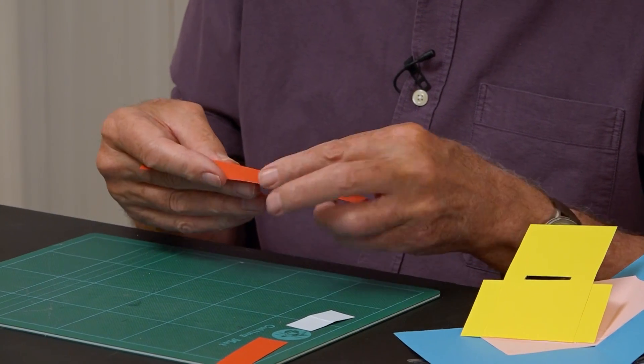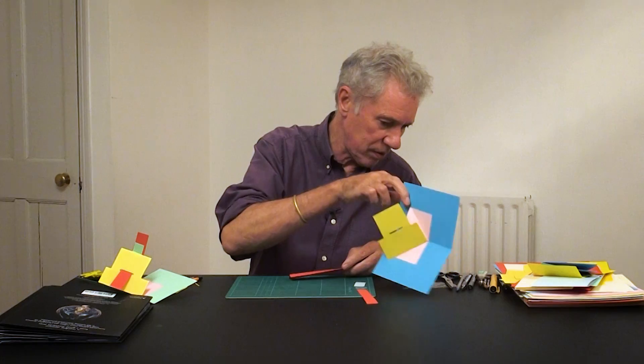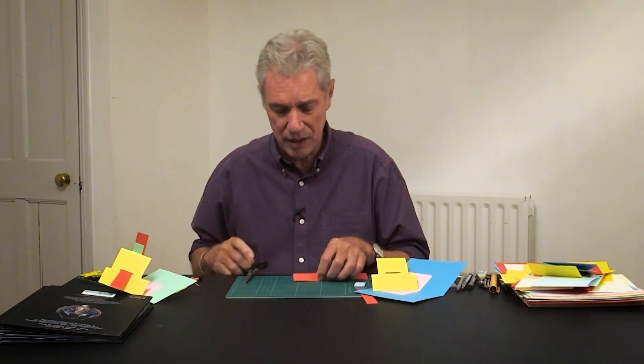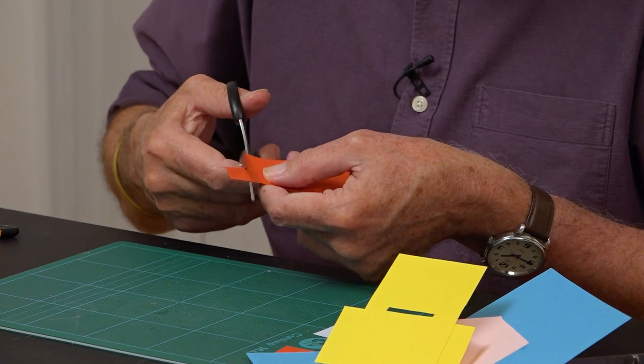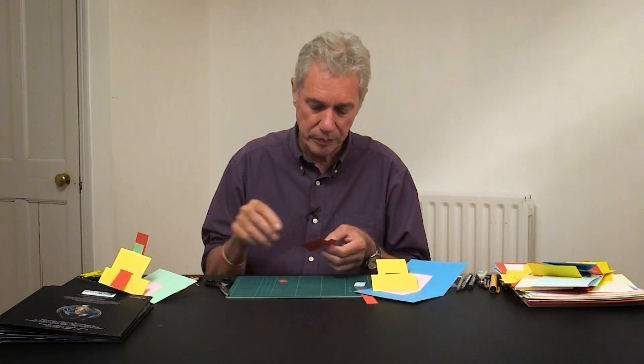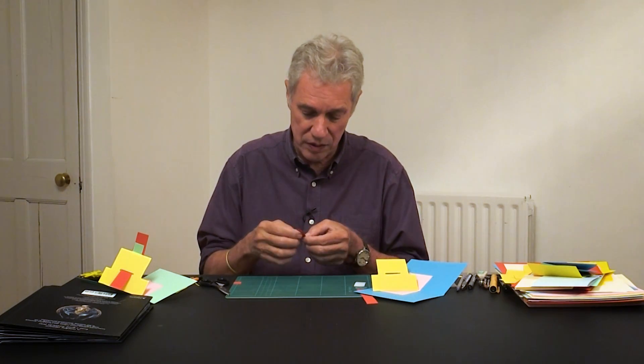So here's the strip I've made. It's got a crease down the middle. I'm going to glue it in a minute, but first we'll just make a tab at one end. So I'll cut a little piece off there.